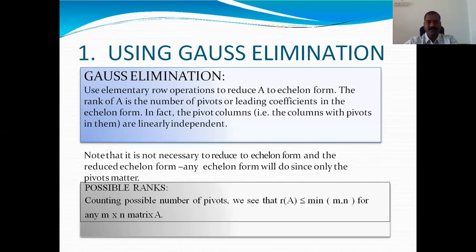By the Gauss elimination method, we perform a sequence of elementary operations — especially row operations — and reduce the matrix A to echelon form. Then the rank is the number of pivots, or leading coefficients, in the echelon form. Note that it is not necessary to reduce to reduced echelon form; any echelon form will work.